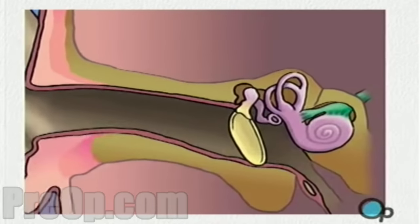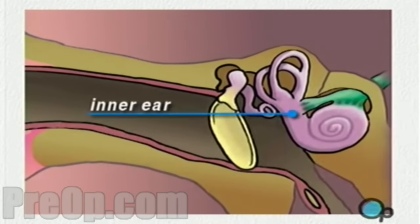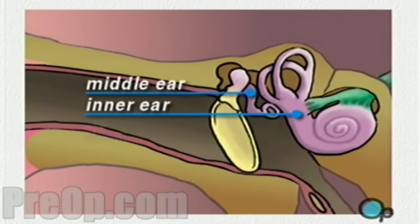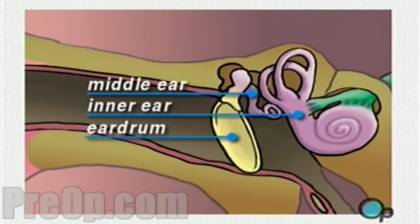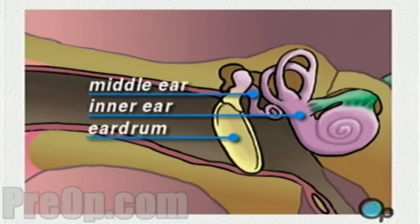The human ear is made up of two chambers: the inner ear and the middle ear. The middle ear is sealed off from the outside environment by the tympanic membrane, or eardrum. In a healthy ear, this membrane acts to protect the delicate interior of the ear from contamination.